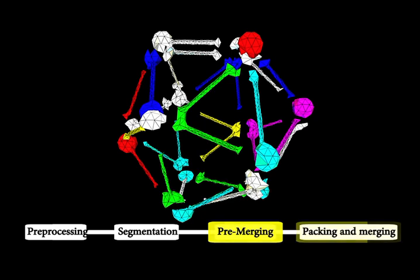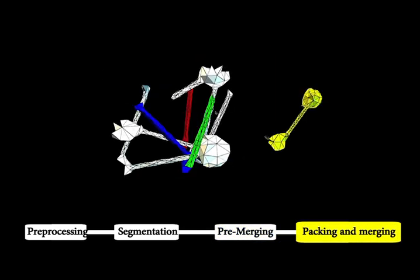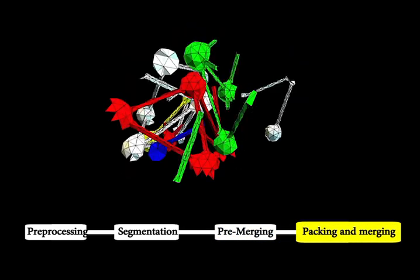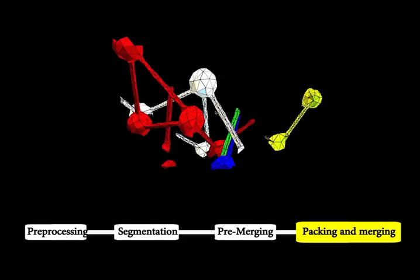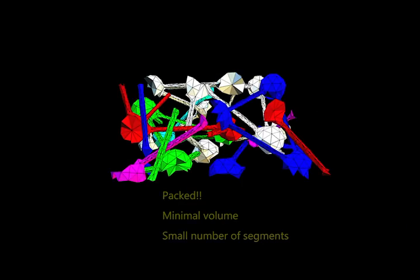The segments are then tightly packed by checking multiple rotations and positions. We use gradient descent and tabu search optimization that minimize the volume of the configuration, maximize the gluing areas, and minimize the number of segments.